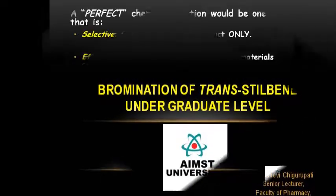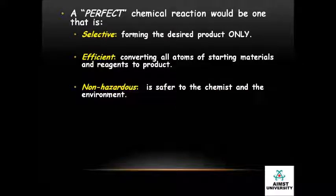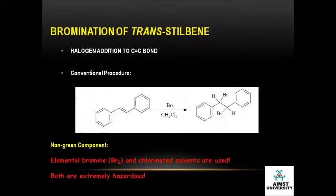A perfect chemical reaction would be one that is very selective, efficient, and non-hazardous. Selective means it should form the desired product only. Efficient means it should convert all the atoms of starting material and also reagents to the products. Non-hazardous means it should be safer to the chemist and also to the environment.